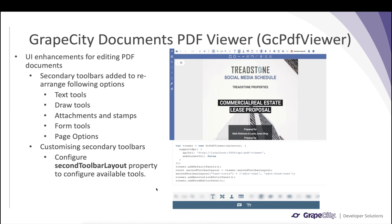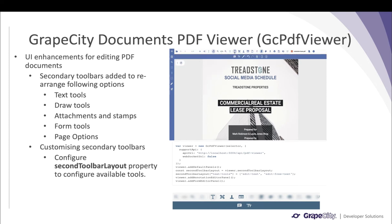Moving on to GC PDF Viewer: in this release we have added new enhancements to the UI to provide quick editing of PDF documents. We have rearranged various annotation, form field, and page options into a new secondary toolbar. Text Tools provides all text-related annotations; Draw Tools provides all shape annotations; Attachments and Stamps provides attachment, stamp, signing, and sound annotation options; Form Tools provides all form-field related options for preparing a PDF form; and Page Options provides page-related options like adding or deleting pages. Each secondary toolbar also includes undo/redo buttons and the redact annotation option.